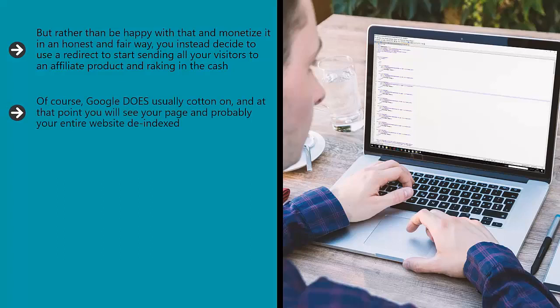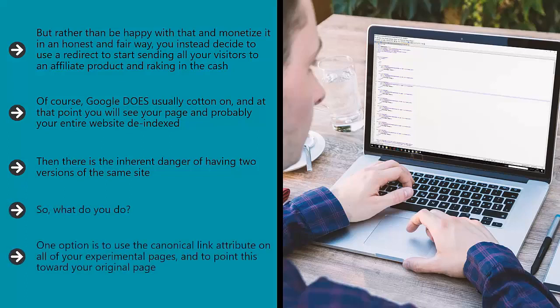Of course, Google does usually cotton on, and at that point you will see your page and probably your entire website de-indexed. This is what Google doesn't want to see. Then there is the inherent danger of having two versions of the same site — Google might see this as spammy, it might see this as confusing, and it could hurt your ranking. So what do you do? One option is to use the canonical link attribute on all of your experimental pages and to point this toward your original page. This tells Google's robots which page is the original, and that ensures that it will understand what's going on and see that you're not trying anything fishy.